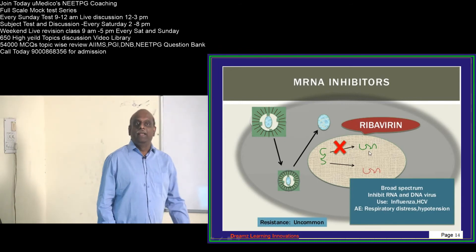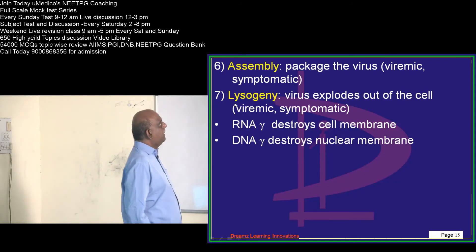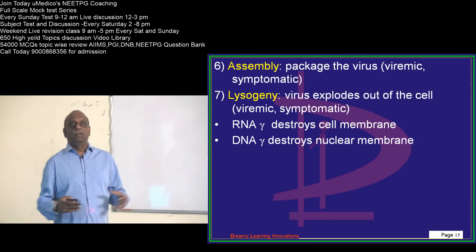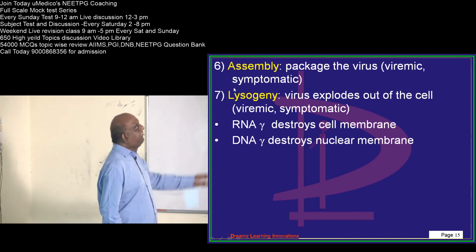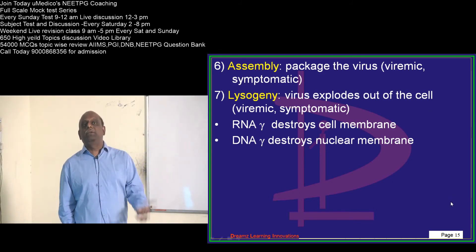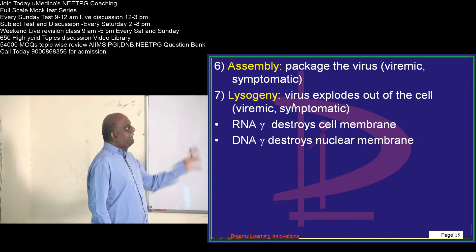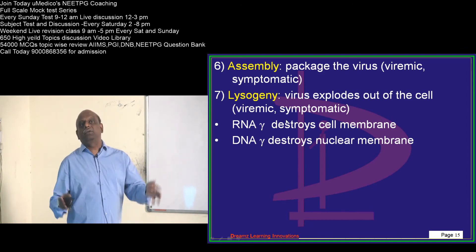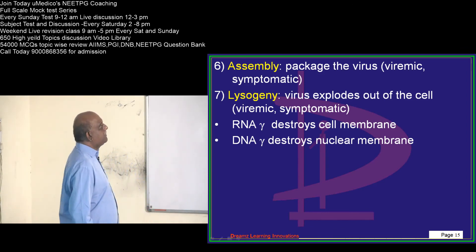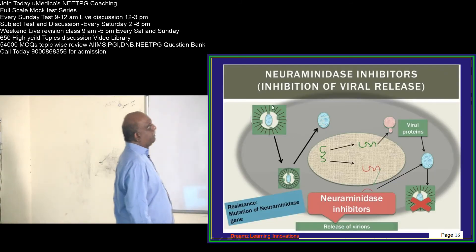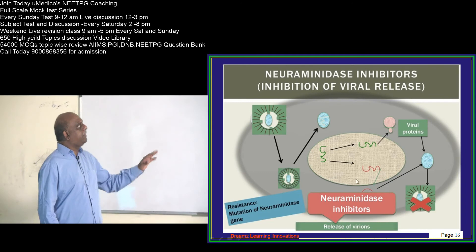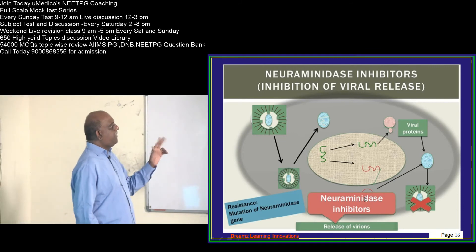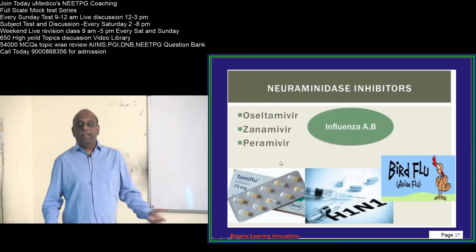Ribavirin-like drugs are called mRNA inhibitors. During viral assembly, packaging of proteins occurs, making the patient viremic and symptomatic. When the virus eventually explodes out of the cell, it causes cell breakdown. Neuraminidase inhibitors act by inhibiting the release of the virus from the host cell.